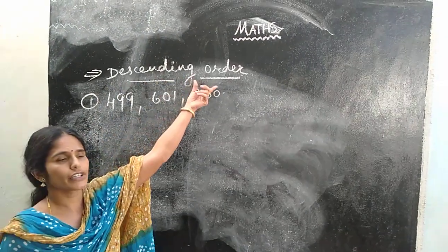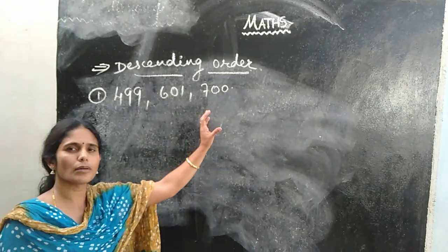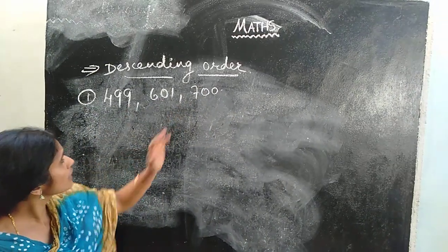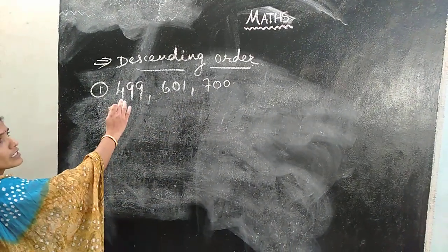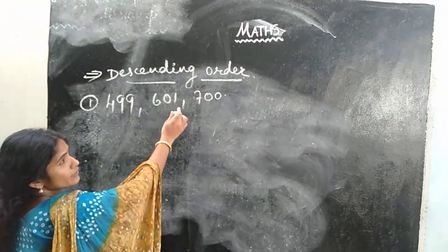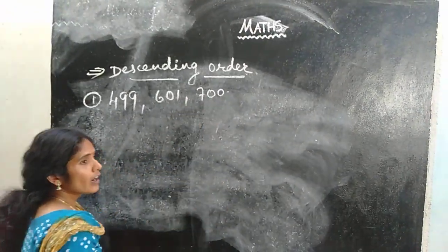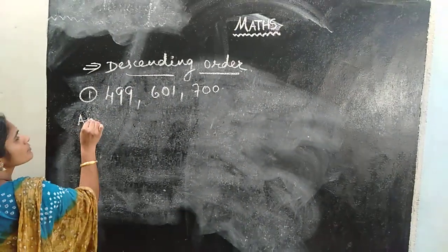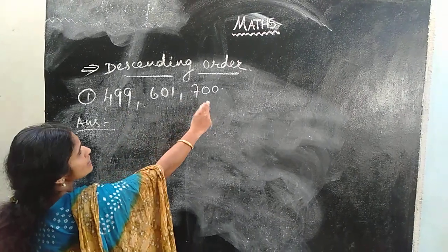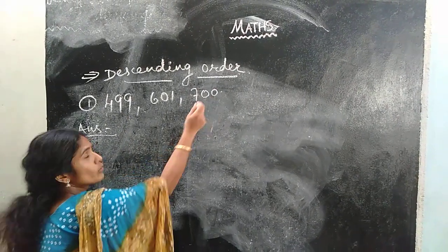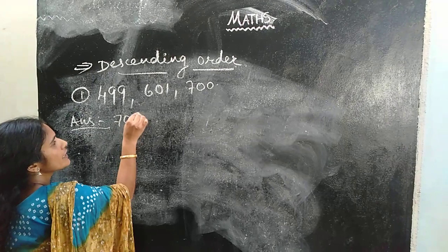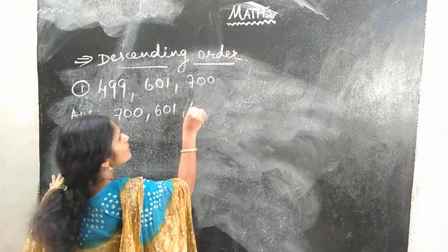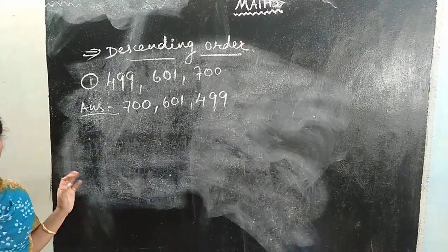The next is descending order. Descending order means arrange the given numbers from greater to smaller. The numbers given are 499, 601 and 700. How we can arrange these numbers in descending order? Which is the bigger number? 700. So first write 700. The next one is 601 and the last one is 499.